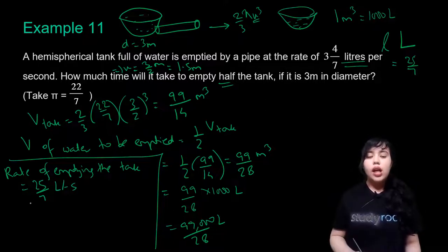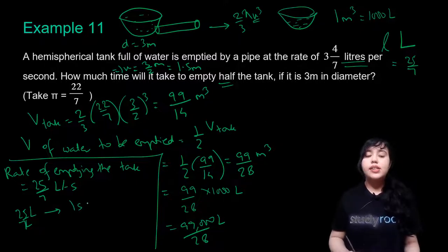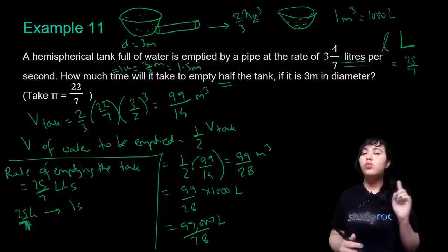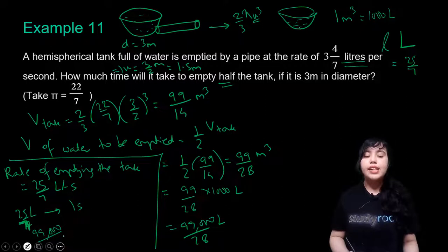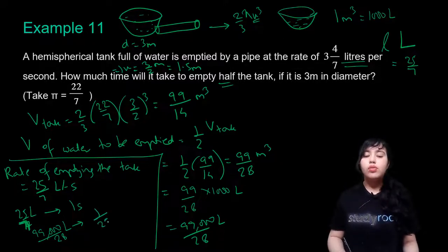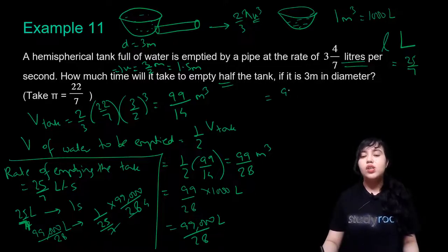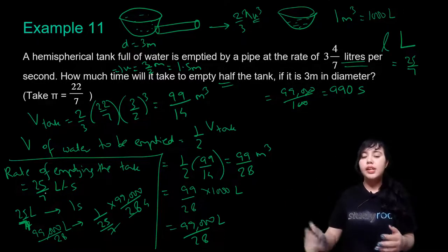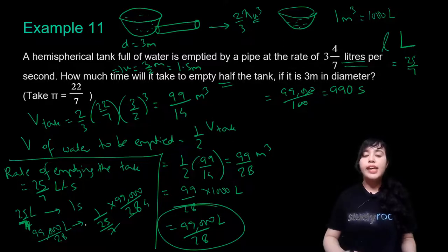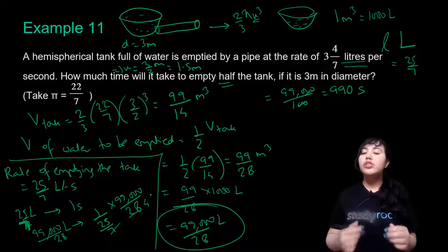By unitary method: time = volume ÷ rate = (99,000/28) ÷ (25/7). The 7 moves to the numerator and 28 = 4×7 simplifies, giving 99,000 ÷ (25 × 4) = 99,000/100 = 990 seconds. So half the hemisphere is emptied in 990 seconds.